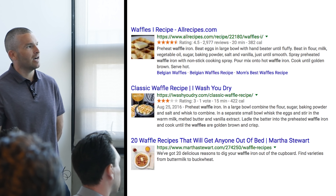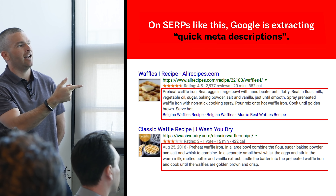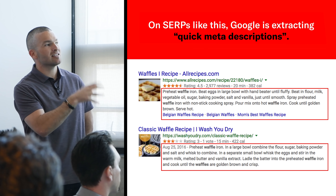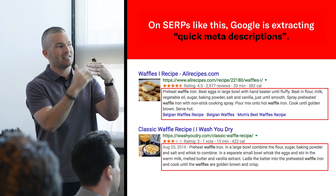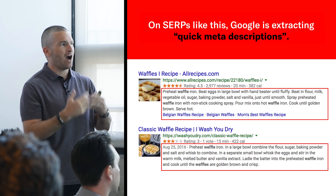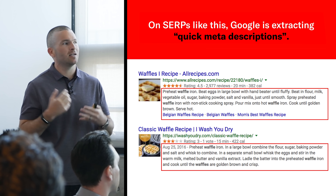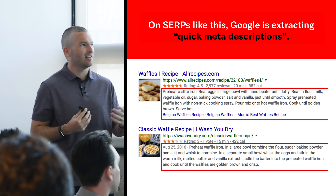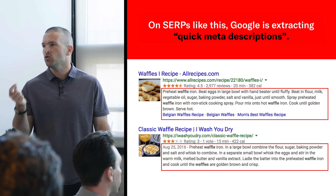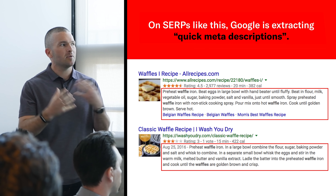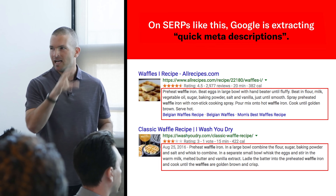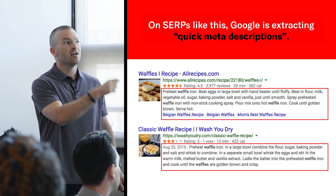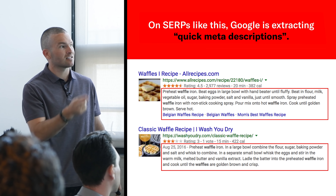'Waffle recipes' takes it to another level — it's what I would describe as a quick meta description. They have a quick answer already, and you can see they're actually pulling in the steps of how to create waffles and putting it there. Google does this a lot on search results like this — most descriptions get extended, they're trying to answer how to cook waffles without the user ever having to click something. It's a bummer for us, but it gives you better click-through rate to solve for that and hopefully most people can't actually make waffles without clicking for more detail.